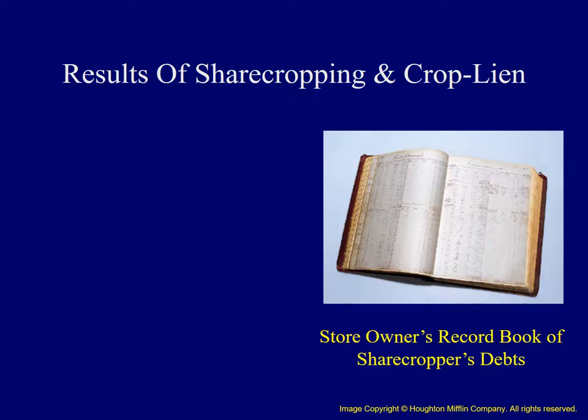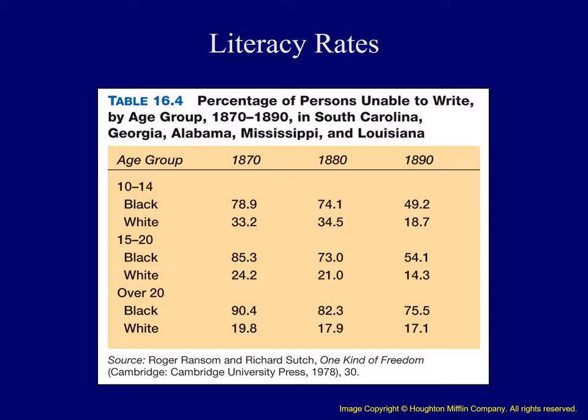Poor whites as well as blacks were very often unable to escape this cycle of debt. As we see from this visual aid, this is a store owner's record of debts by a variety of different sharecroppers. This table demonstrates literacy rates in the American South in the years after the Civil War. Large numbers of black Americans as well as whites were illiterate in states like South Carolina, Georgia, Alabama, Mississippi, and Louisiana. This only added to the economic woes facing people who were sharecroppers.